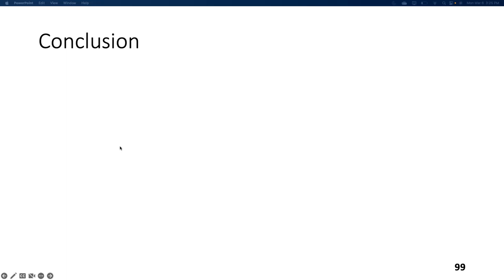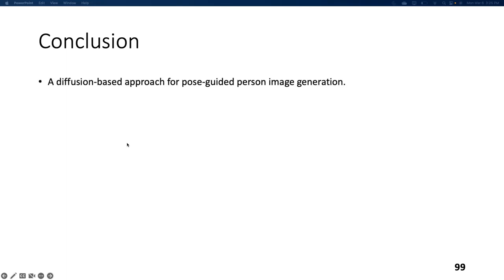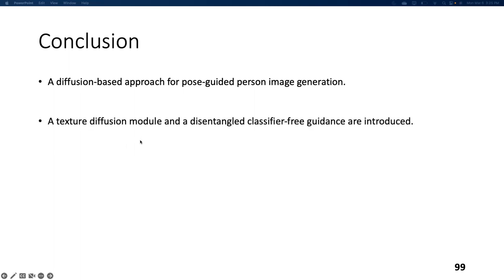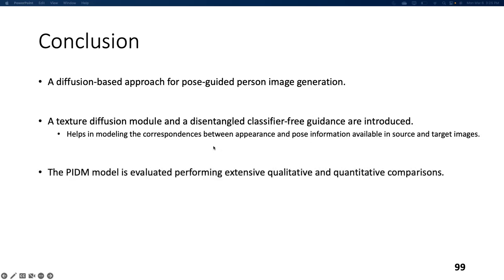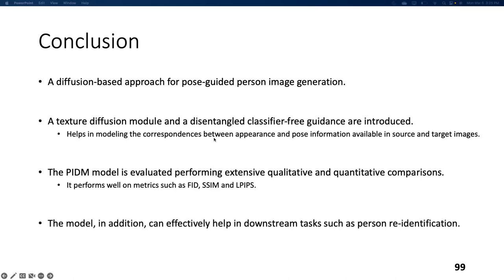To conclude: this is the first diffusion-based approach for pose-guided person image generation. The authors introduced two novel components — a Texture Diffusion Module and disentangled classifier-free guidance — which together model correspondences between style and pose information in source and target images. PIDM is evaluated through extensive qualitative and quantitative comparisons, performing well on FID, SSIM, and LPIPS metrics, and can effectively assist in downstream tasks such as person re-identification.